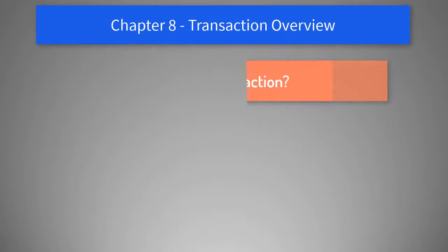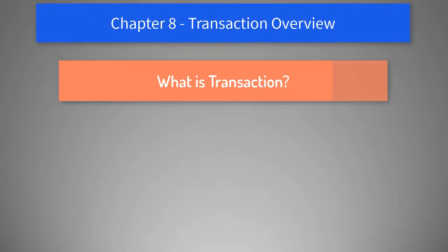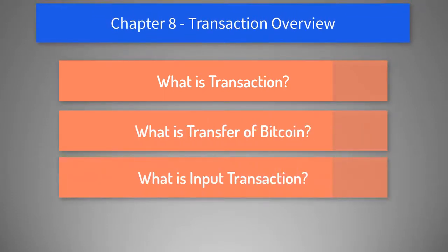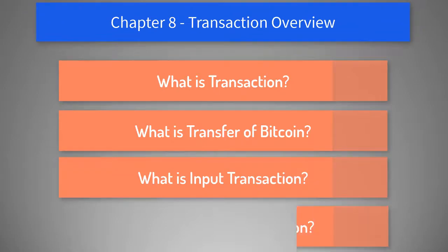By the end of this chapter you will understand the in and out of transaction in blockchain, what is the meaning of transfer of Bitcoin from one address to another, what is input transaction and what is output transaction.